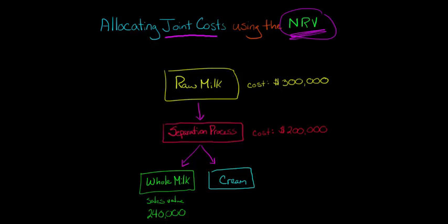So let's say you have a dairy farm. You produce raw milk at a cost of $300,000. Then you have a separation process that costs $200,000. And then you end up with two joint products. You have whole milk and you have some cream.